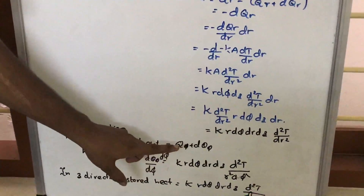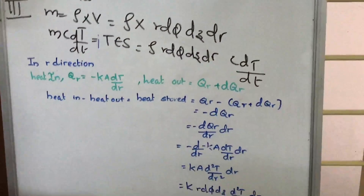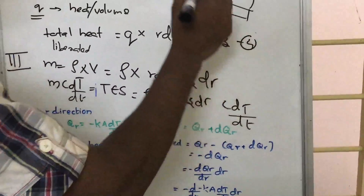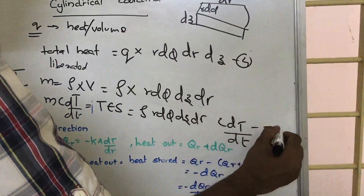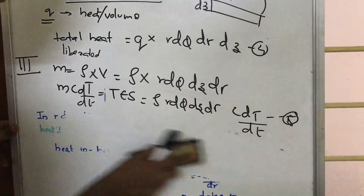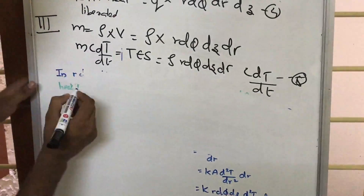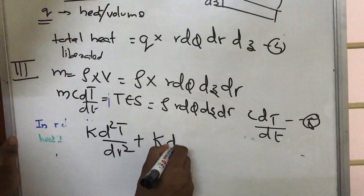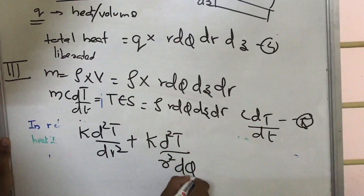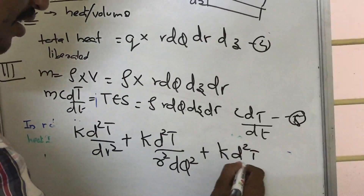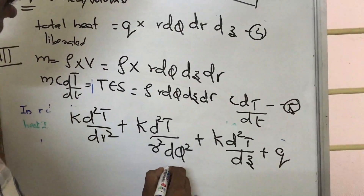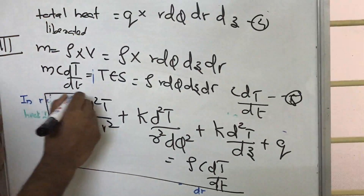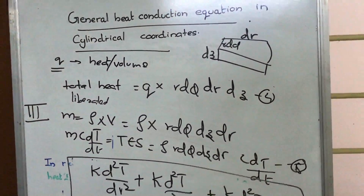Taking equations 1, 2, 3 (energy stored in r, φ, z directions and heat liberation) and equating their sum to equation 5 (total energy stored), we get the heat conduction equation in cylindrical coordinates: k·d²T/dr² + k/(r²)·d²T/dφ² + k·d²T/dz² + Q = ρ·c·dT/dt. This is the heat conduction equation in cylindrical coordinates.